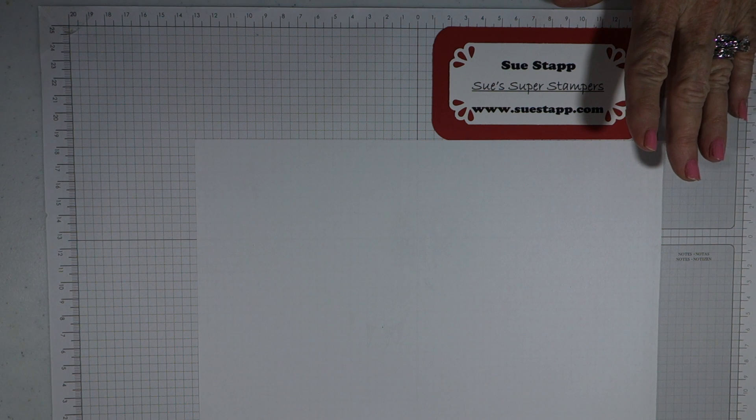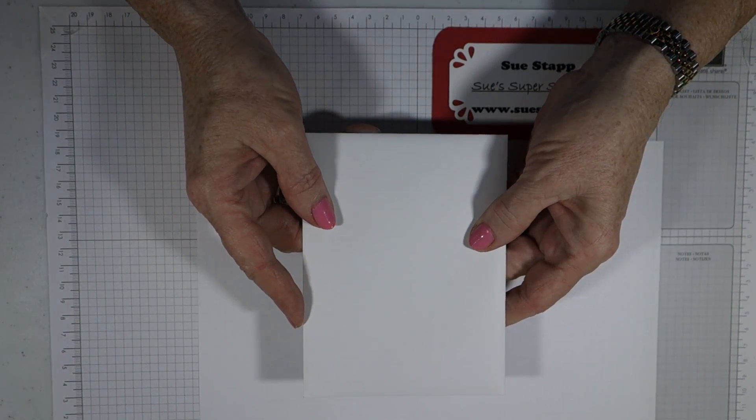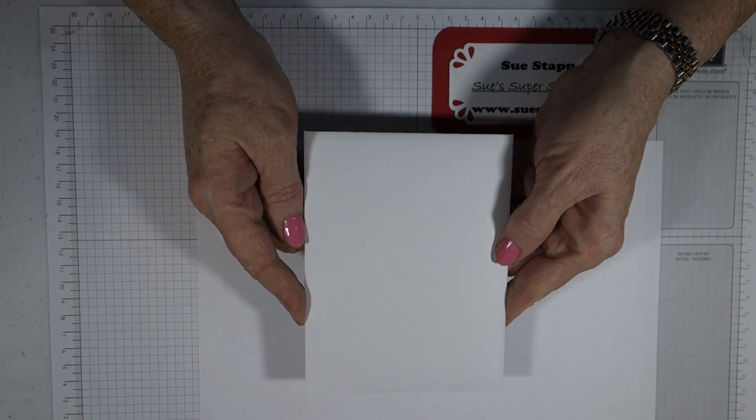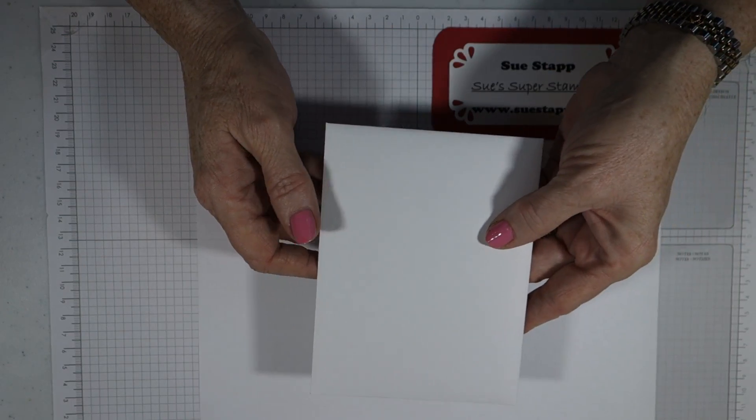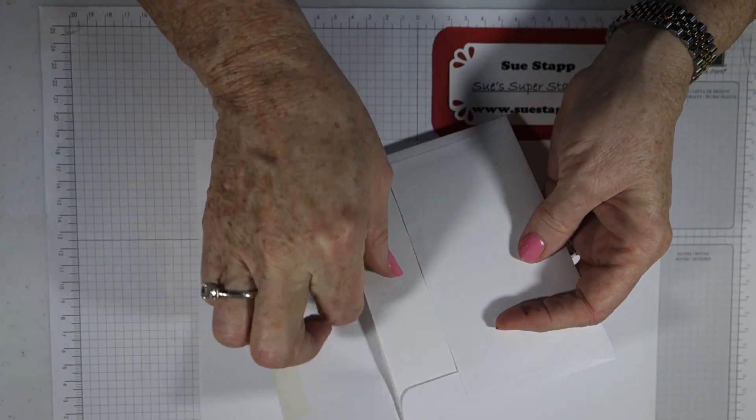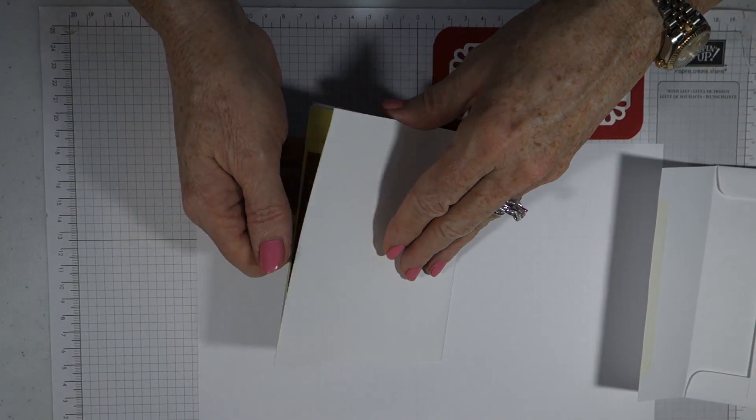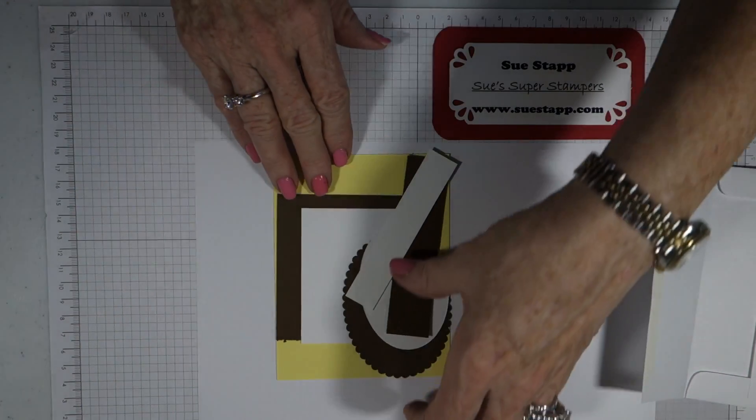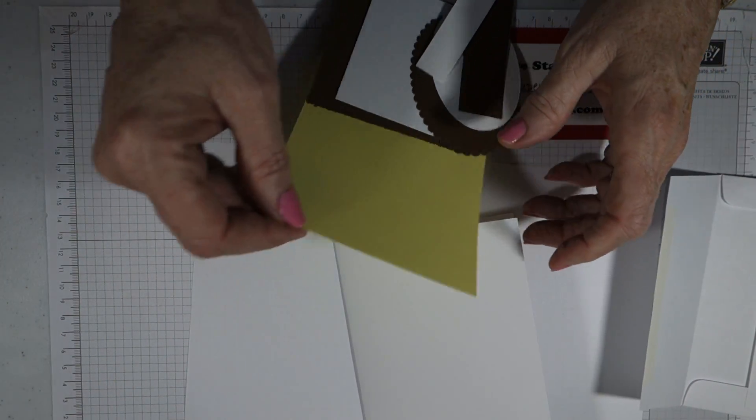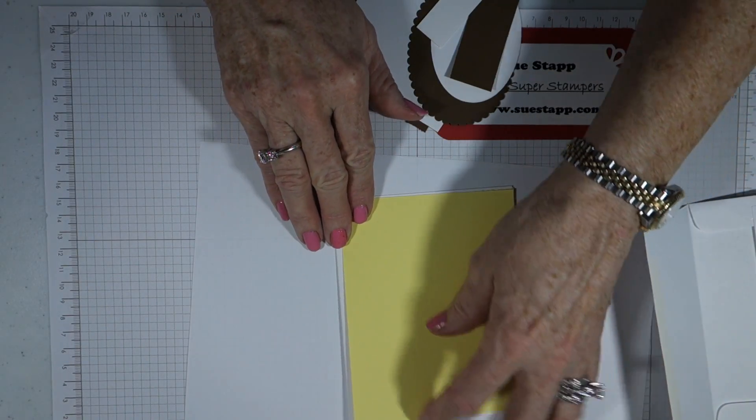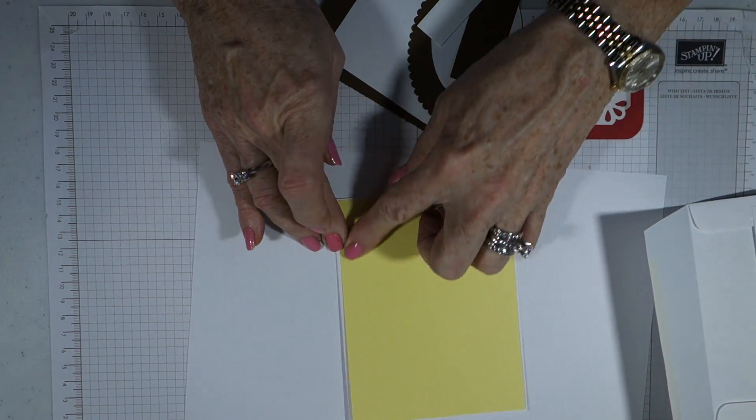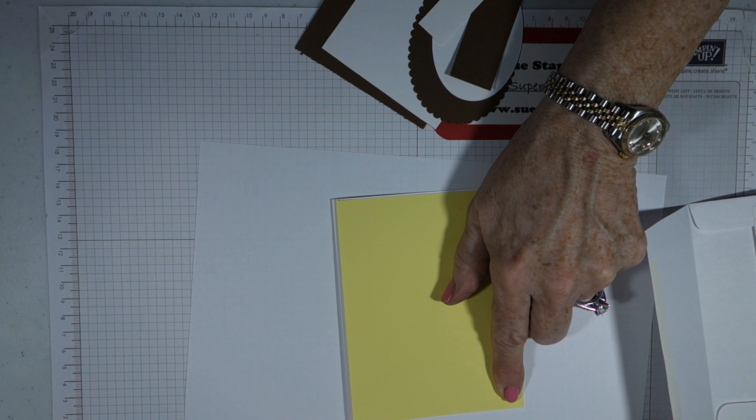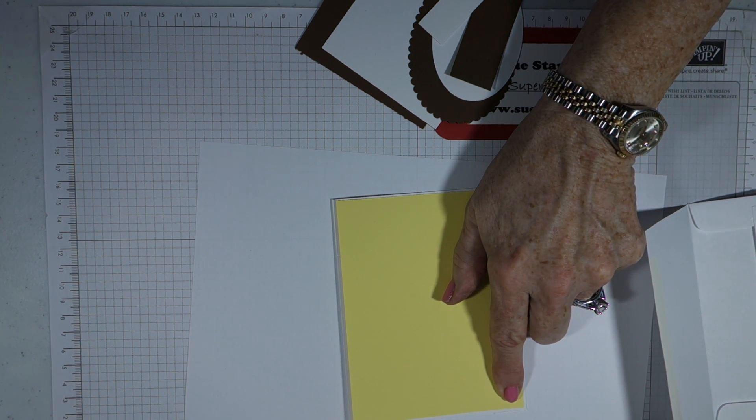I will show you a couple of the steps in putting this together. If you're not able to join me at my workshops in my home or at other locations, I have a program called Workshops in the Mail. You can subscribe to that, and each month you'll get the four cards that we do at our workshop. This is the base card, and then they have a yellow that's going to go on here. The yellow is 5 1⁄4 by 4.